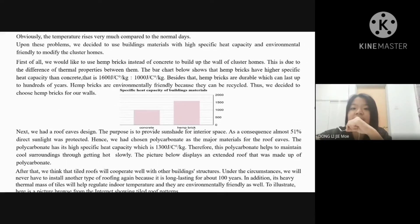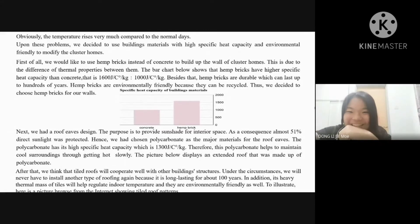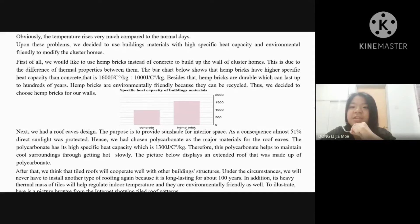After that, we think that a tile roof will work well with the other building structures. We will never have to install another type of roofing again because it is long-lasting for about 100 years. In addition, the heavy thermal mass of tile helps regulate indoor temperature, and it is environmentally friendly as well. Here is a picture from the internet showing the tile roof patterns.